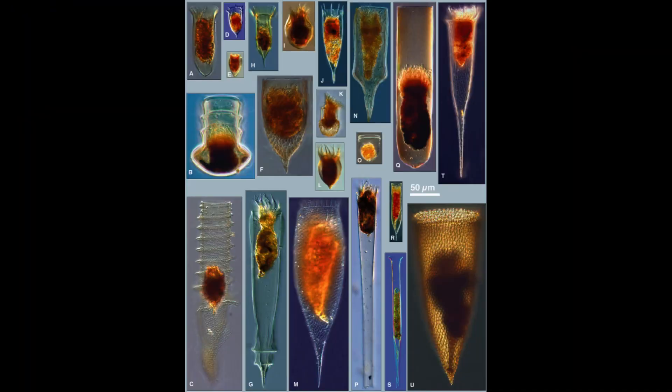Our oldest ciliate fossils are from the Ediacaran, around 580 million years old, and belong to a stunning little group called the Tintinids. These ciliates construct a proteinaceous shell called a lorica, a cup-like structure that can take on a myriad of forms. The ciliate itself sits within the cup, occasionally extending its tentacle-like cilia to extract food particles from the water. Other ciliates are oblong, like the heterotrichs, which include characteristic genera like Stentor and typically have long cilia around the protostome for feeding and movement.